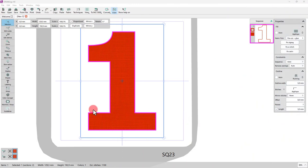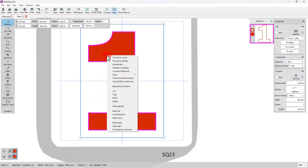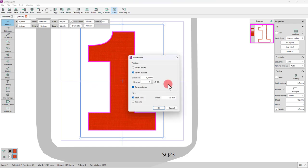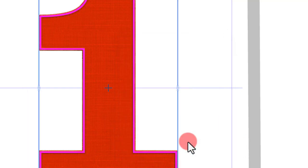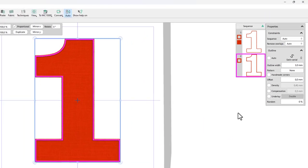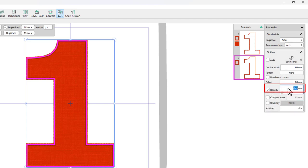Let's add some decorative stitches using the Auto Border tool. Right click and use the Auto Border option. We will set the distance to 0, repeats to 1 and set the type to Satin Serial with 3 mm width. Having this outline selected, we will set the density to 2 mm.